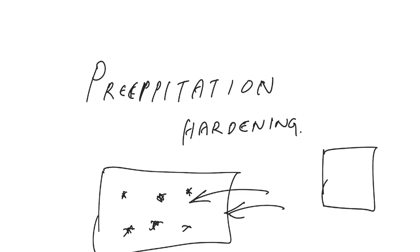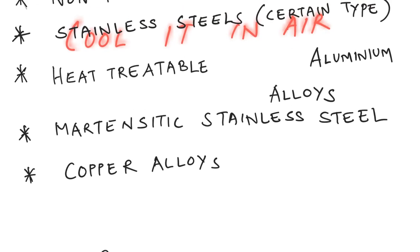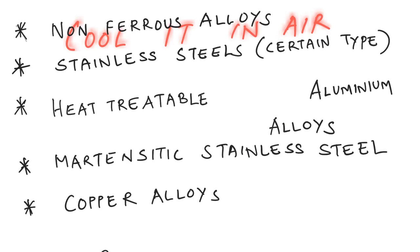For example, in an aluminium-copper alloy, once the solubility limit of copper in aluminium is exceeded, copper precipitates out. The matrix is aluminium — the dominant phase — and the precipitated particles are copper. This improves the properties of the alloy. The key takeaway is that all alloys are not heat treated in the same manner; precipitation hardening is the appropriate option for copper alloys, martensitic stainless steels, and heat-treatable aluminium alloys.